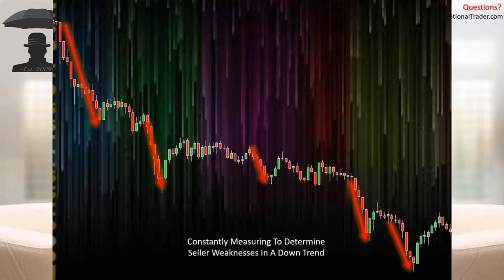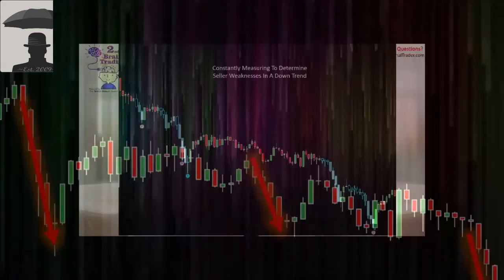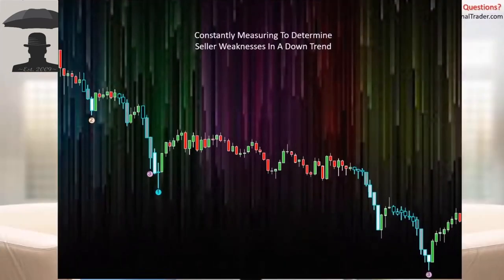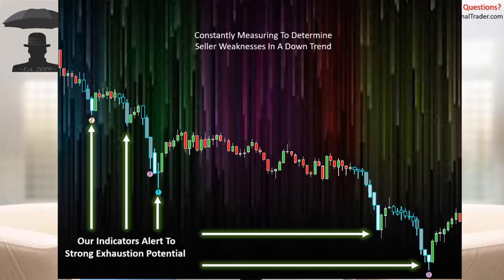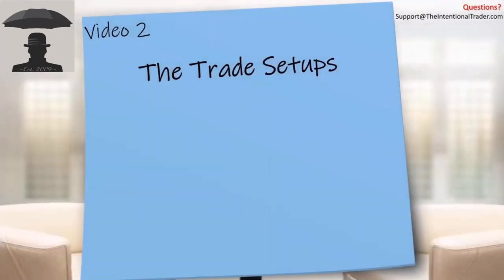When we can anticipate strength, weakness is going to follow, and we almost always get a pullback. When we use our indicators to measure these weaknesses in a downtrend, our indicators alert to strong exhaustion potential. We put the indicators on the charts to give us a heads up and allow us to get ready for the trade. I'm going to show you a trade setup called a speed tick trade setup — this is the second pullback trade that I started trading.